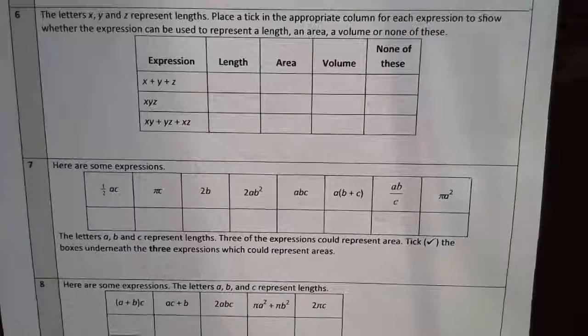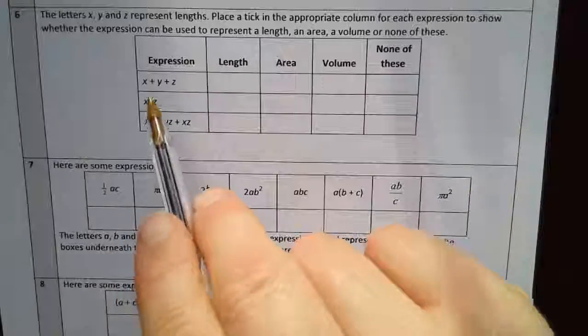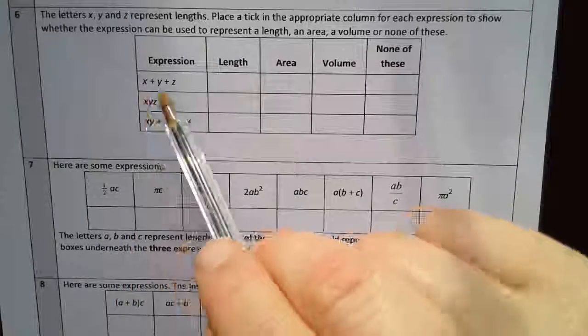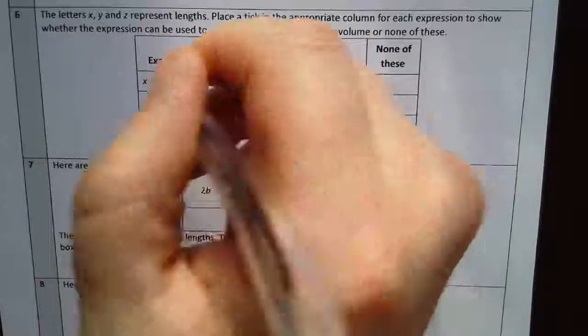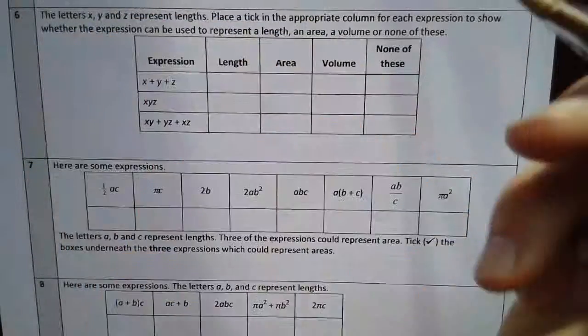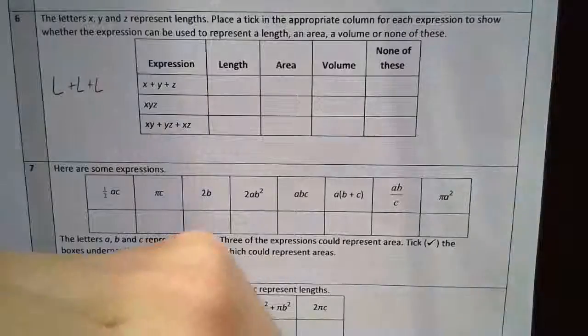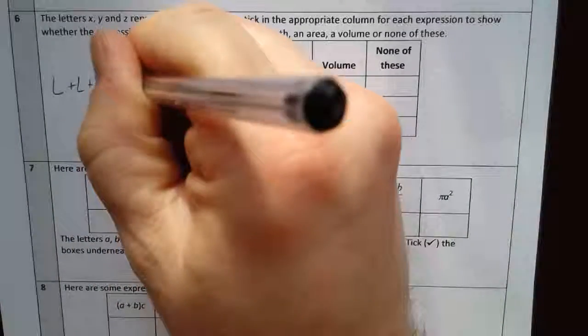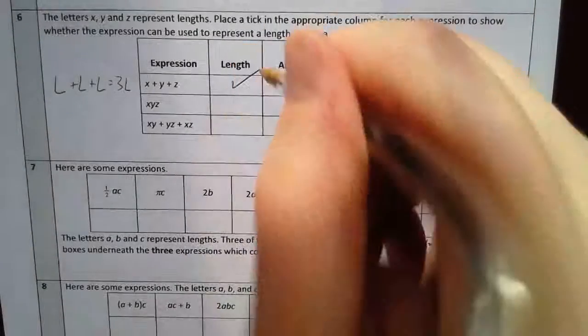My key tip here is to model each of these as L. No matter what the variable is, it's a length. This is essentially a length plus a length plus a length, which is three lots of a length. If I consider it like this, obviously it's not the same length, so it's not strictly accurate, but it's three lots of a length, which is still a length.